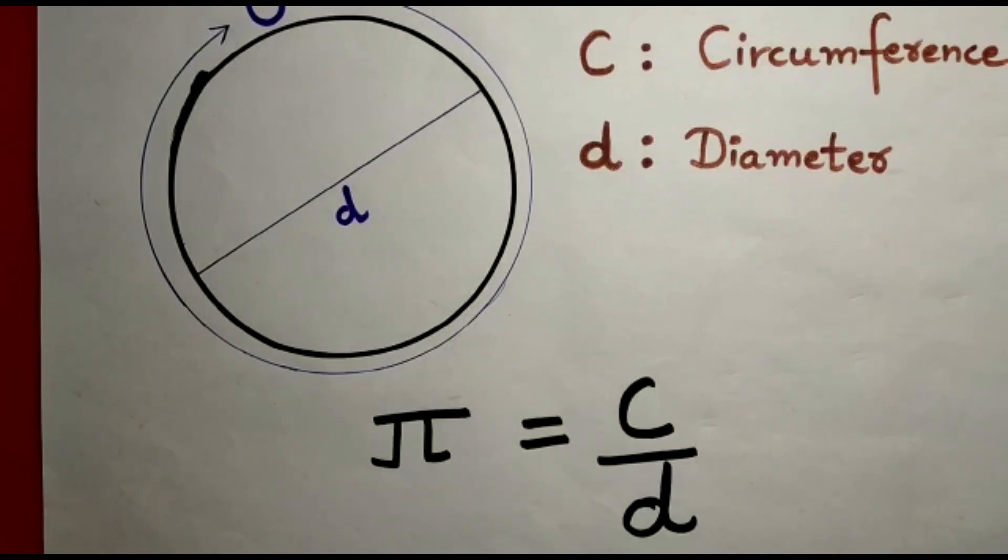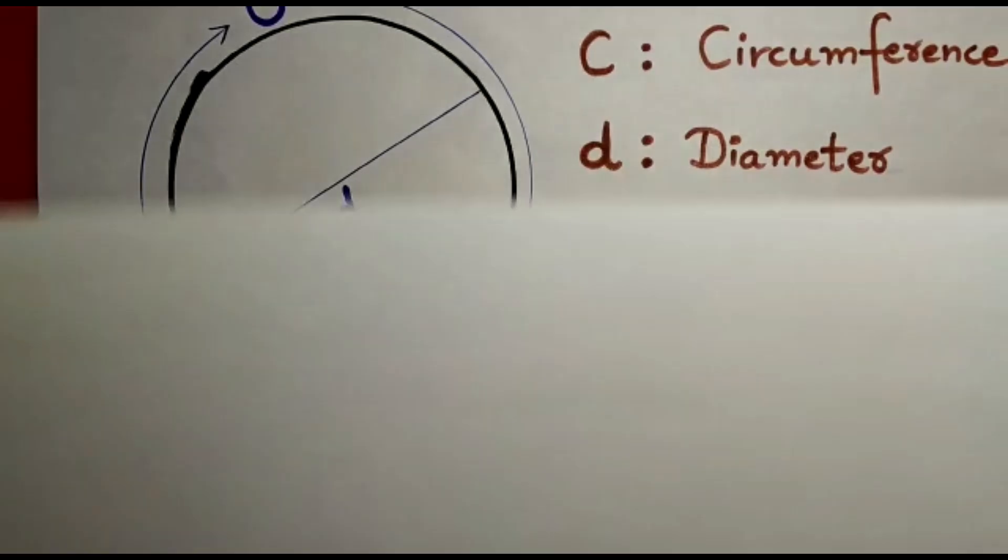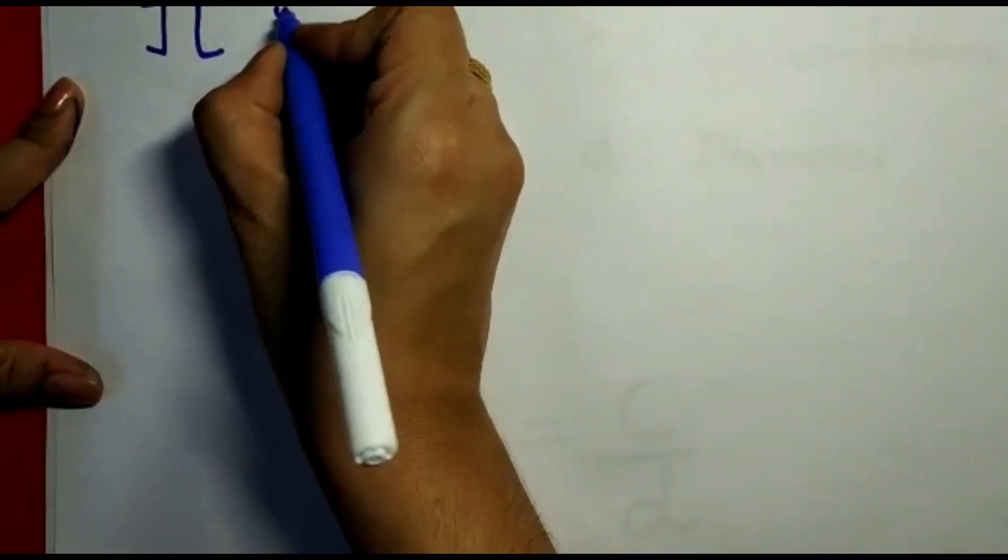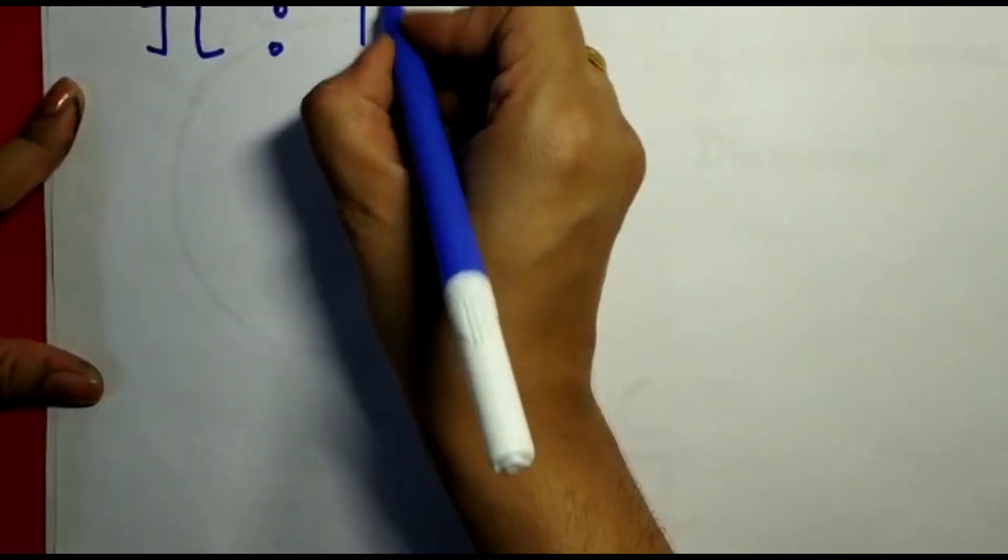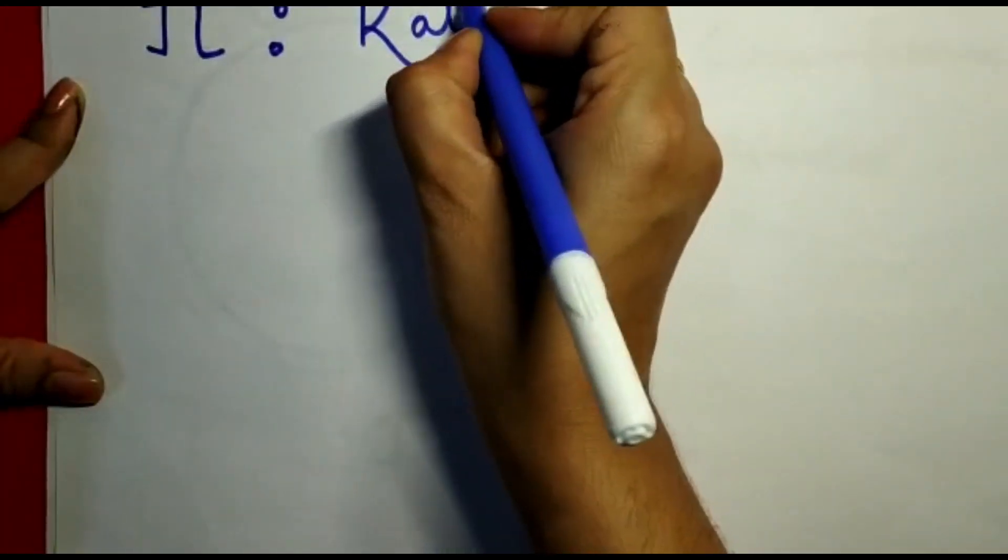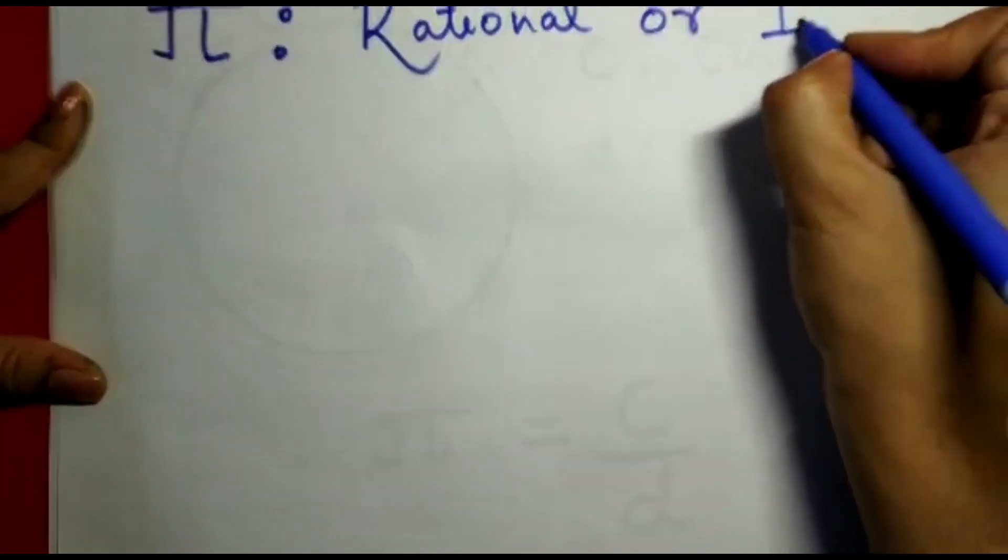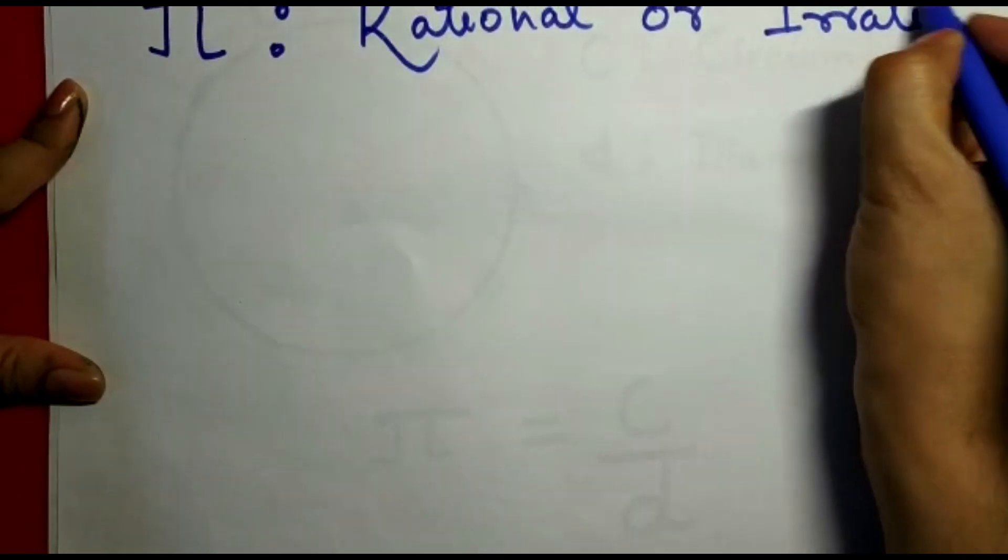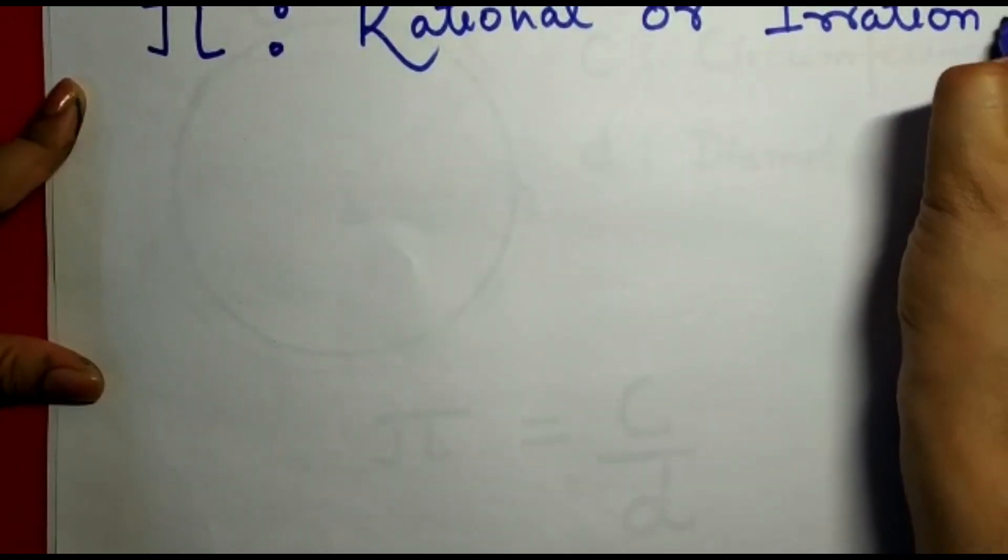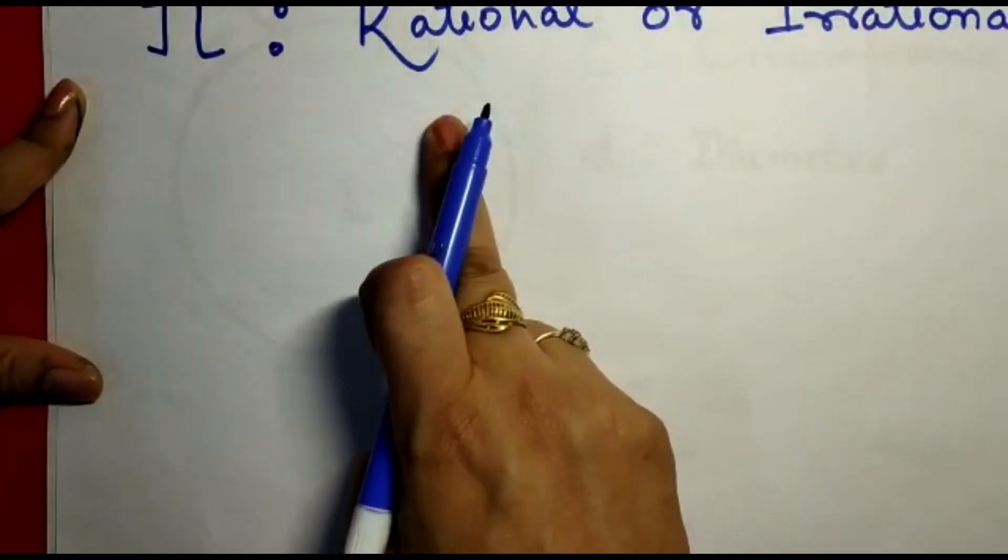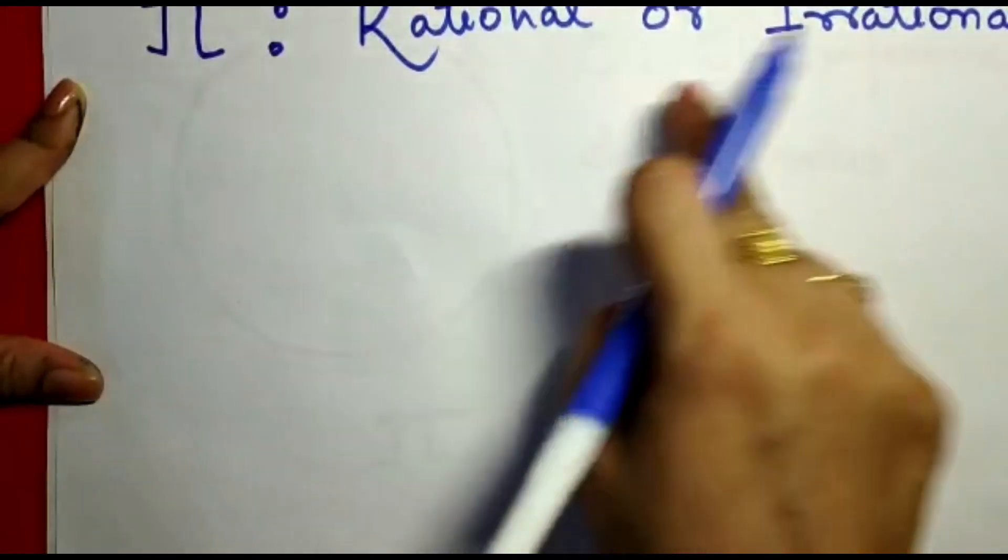The next thing I want to explain is one question: whether Pi is a rational or irrational number. As you can see, I have written two things - rational and irrational.